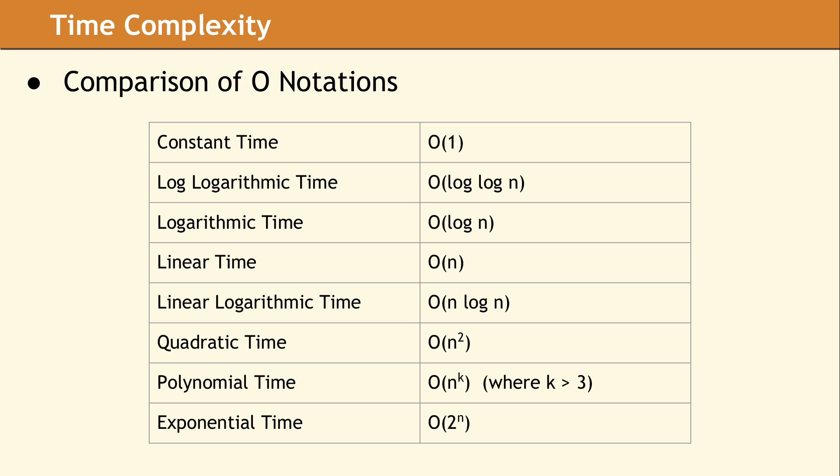The rows on this table are arranged in order, so the best possible complexity is constant time. This notation indicates the algorithm takes a set amount of time, no matter how small or large the data sets. Exponential time indicates the algorithm will take a very long time, even for small data sets.